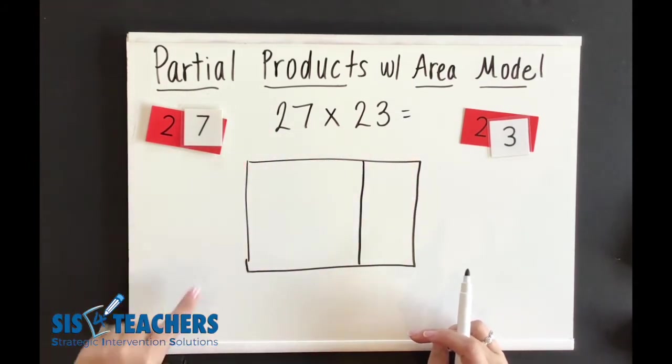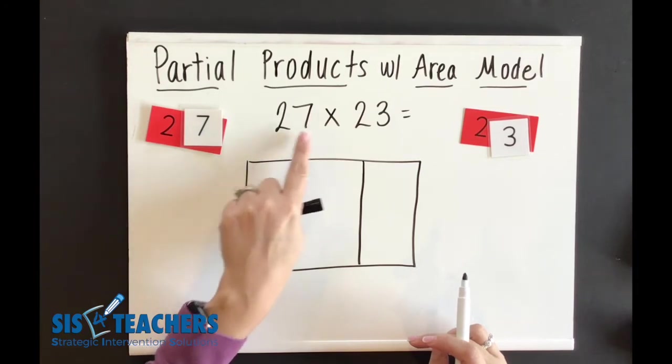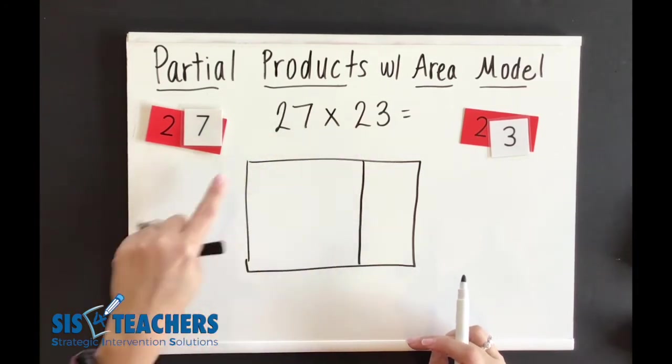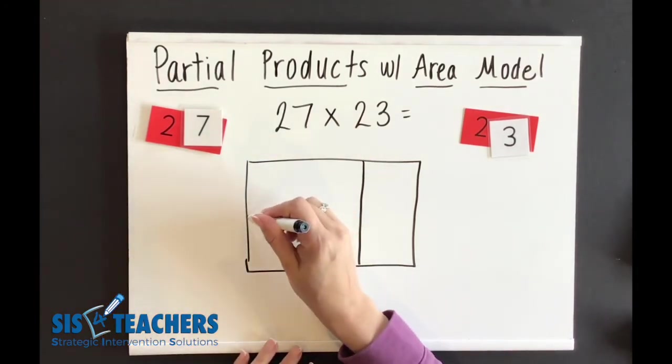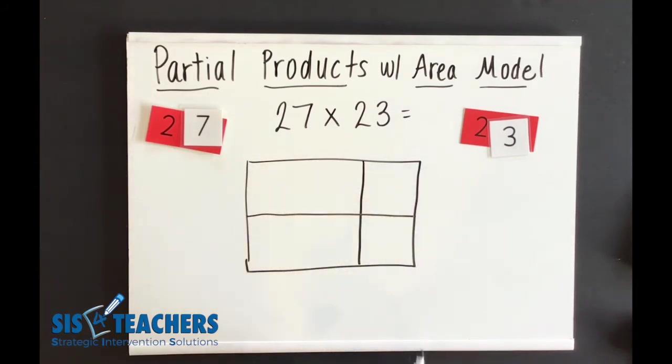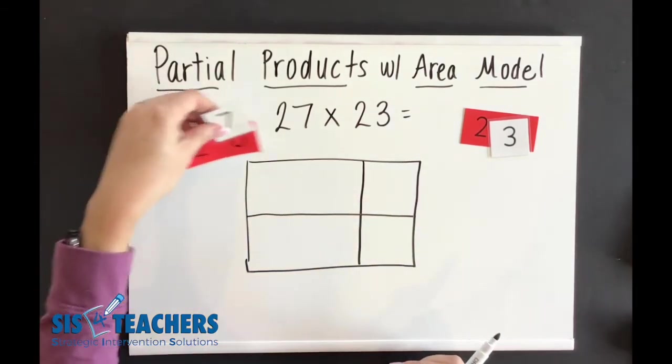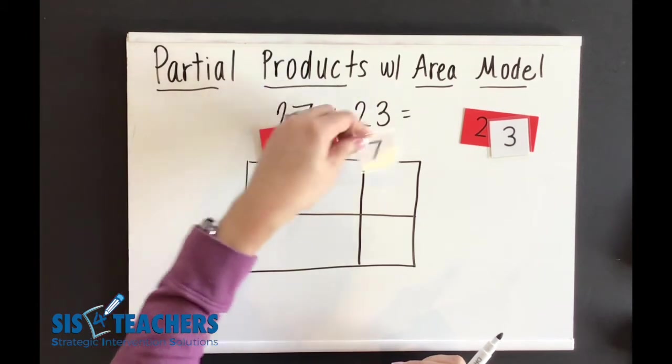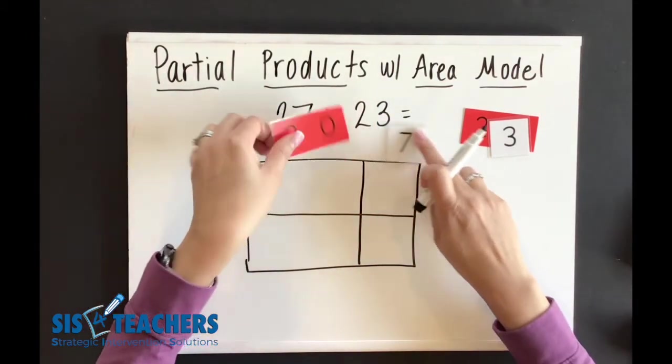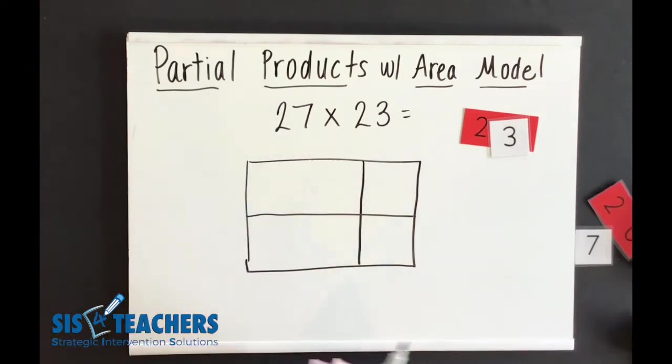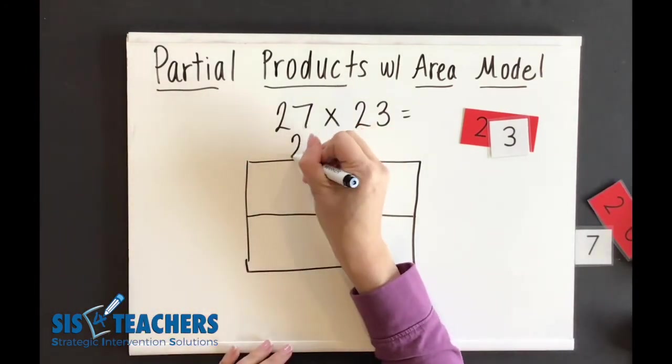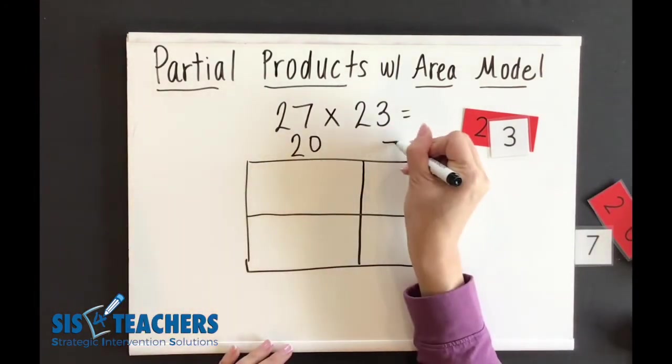If I had 100 here, I could add another column on, but the box is really going to be two digits by two digits. I like to take my first number and decompose it at the top. So I'm going to put my 20 and 7 here at the top. And the reason I'm doing that is because it breaks apart into this part, 20 and 7.